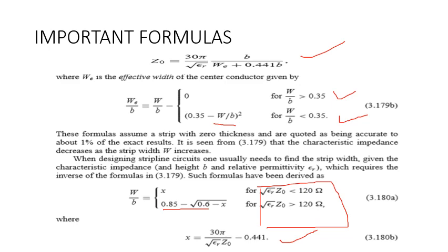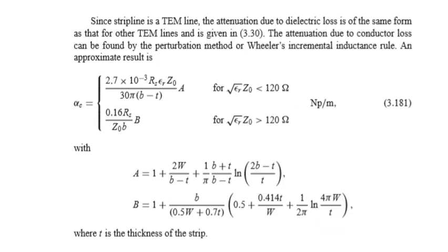After finding x or w/b, move on to attenuation. Alpha means attenuation in microwave engineering. There are two types: one due to dielectric constant (alpha_d) and one due to conductor losses (alpha_c), which arise from the copper present. There are lengthy formulas for both. If √(εᵣ) · Z₀ is less than 120, you use capital A in the formula; if greater than 120 ohms, you use the B formula. You need to memorize these formulas.